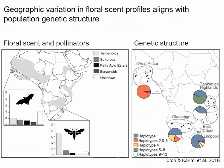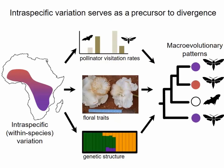Previous researchers in West Africa found sulfurous compounds — common in bat-pollinated species — in baobab profiles, but did not find these sesquiterpenes. So there appears to be geographic variation in pollination systems that may serve as a precursor to divergence. West African populations appear bat-pollinated; South African populations appear hawk-moth-pollinated, with differing floral profiles and clear genetic structuring between these regions.